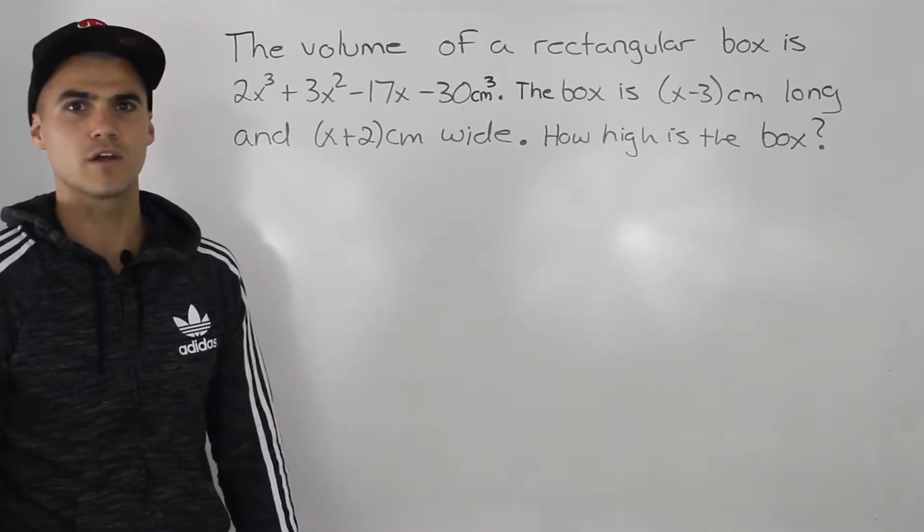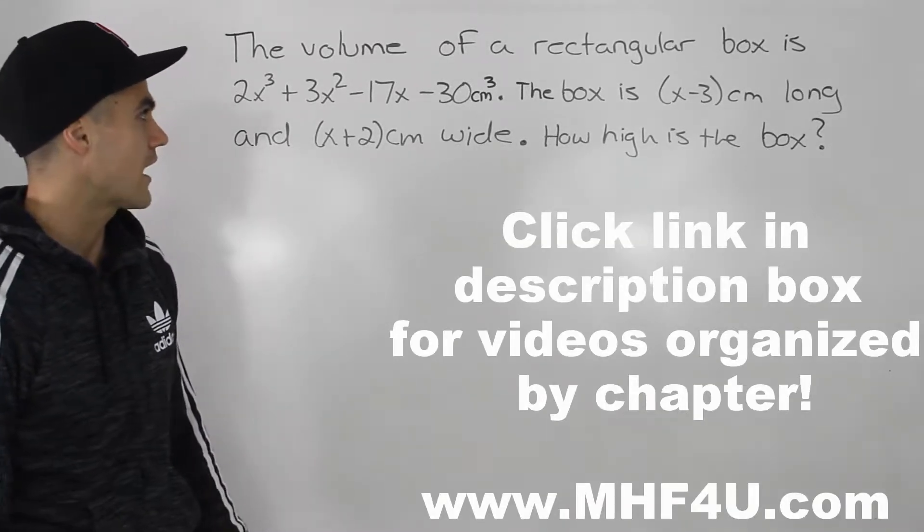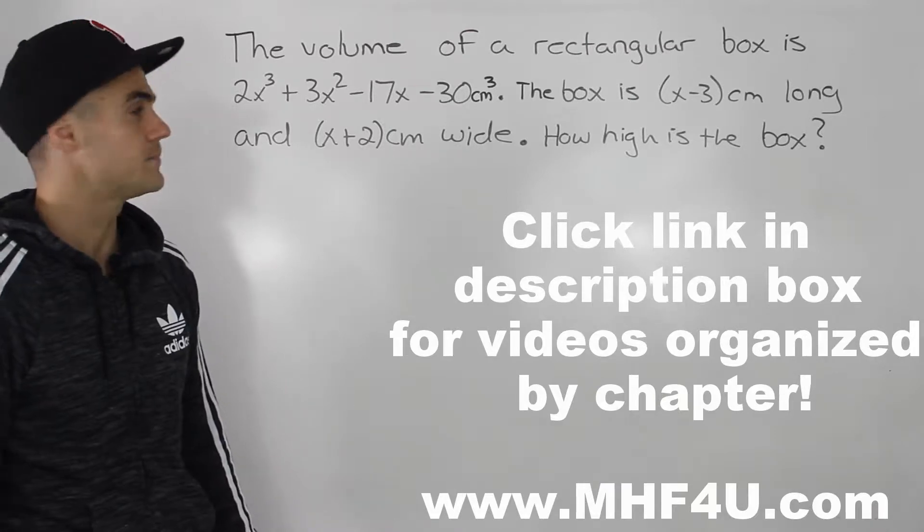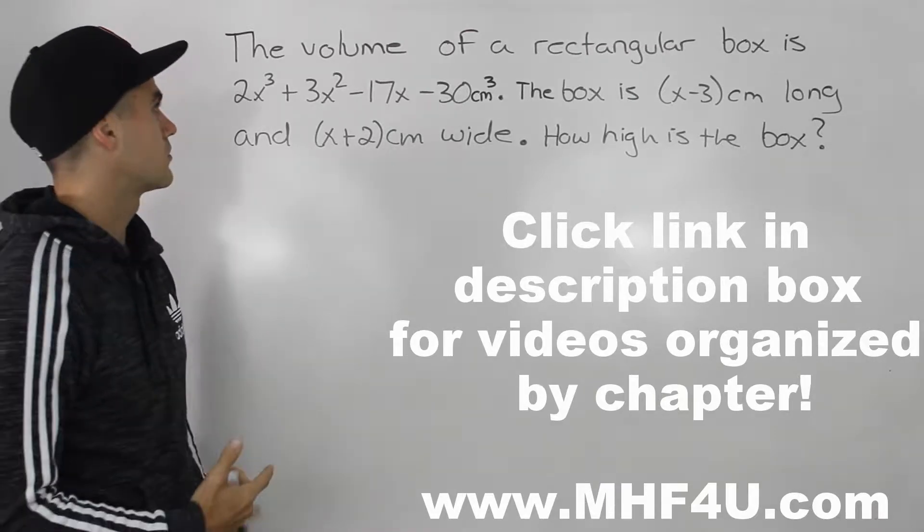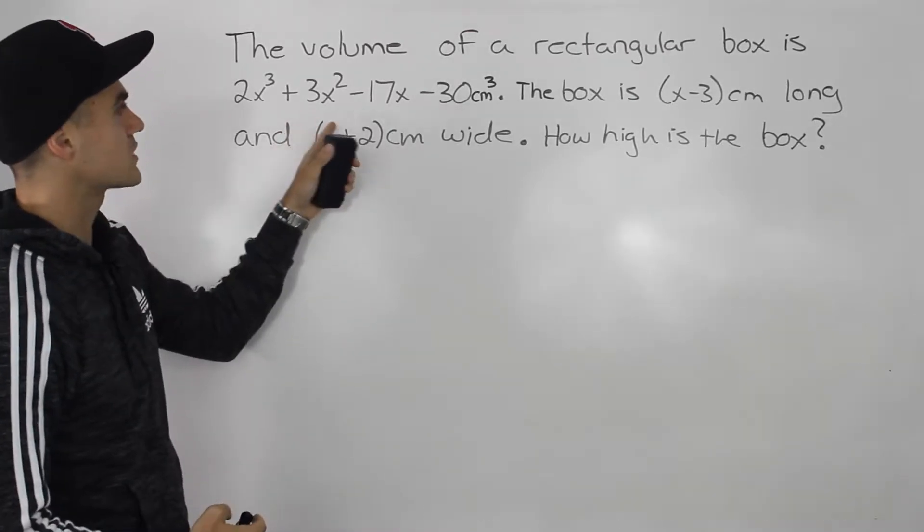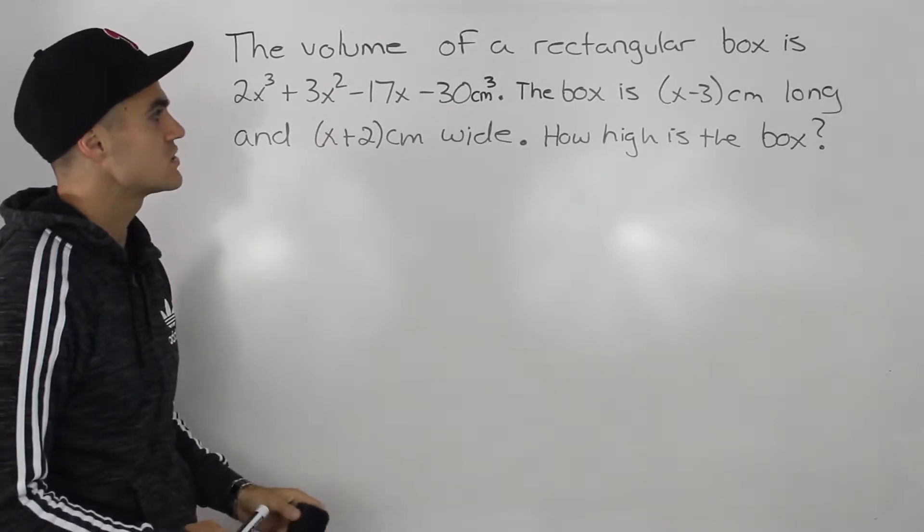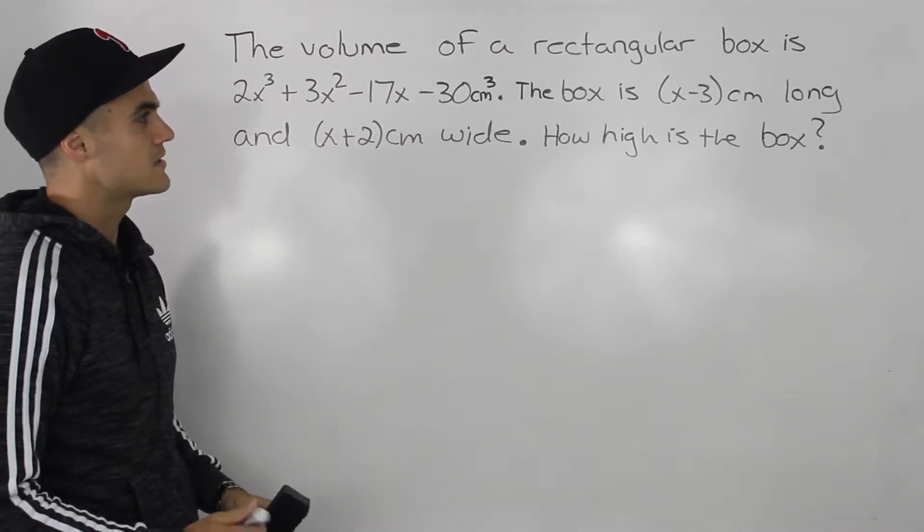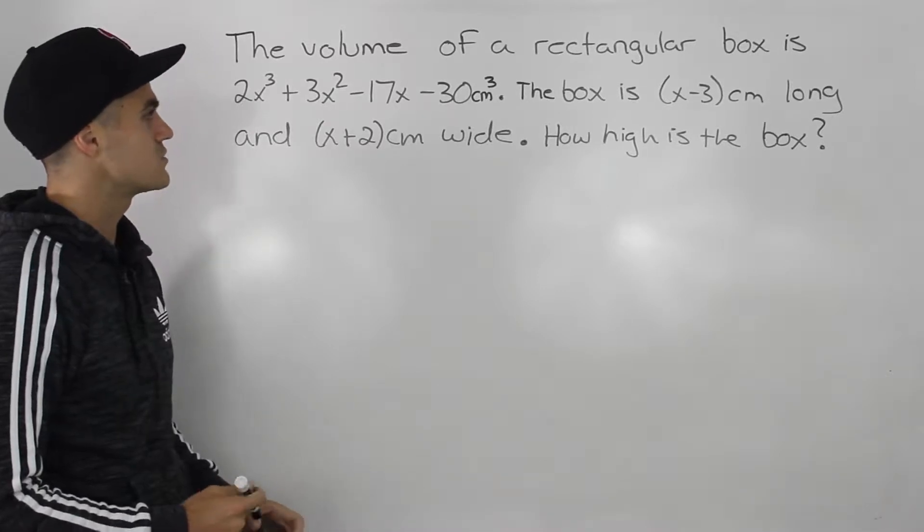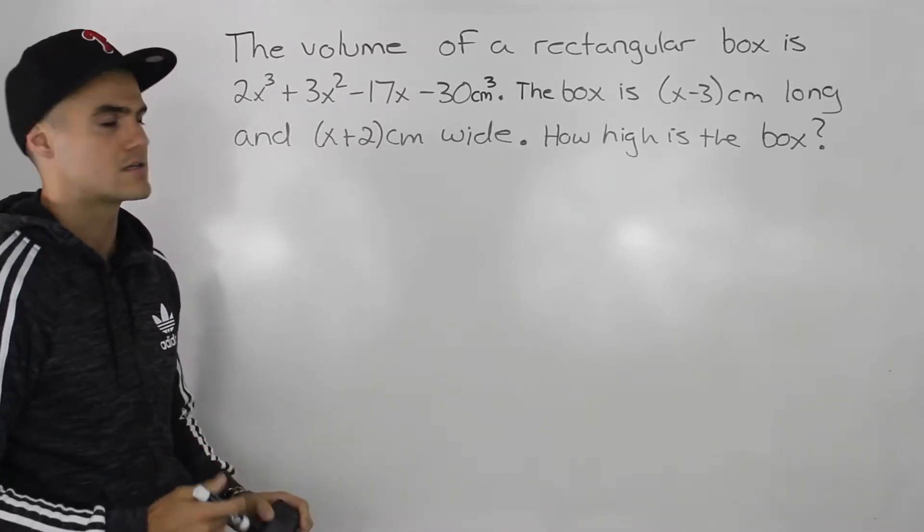Welcome back, everybody. Patrick here. Moving on with polynomial functions, we have a word problem to complete. The volume of a rectangular box is 2x³ + 3x² - 17x - 30 cm³. The box is (x-3) cm long and (x+2) cm wide. How high is the box?